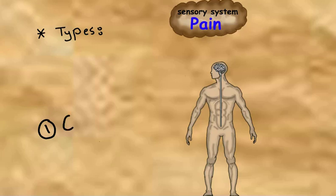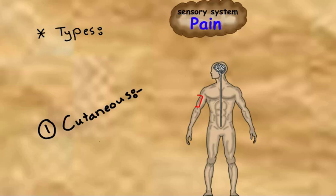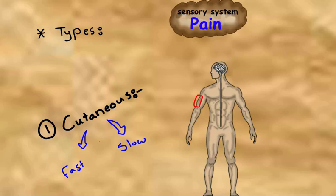There are three types of pain, and we will start with cutaneous pain. From its name, it is the pain of the skin and the subcutaneous tissue. This type contains both qualities of pain: first, fast pain, and second, delayed dull type of pain.